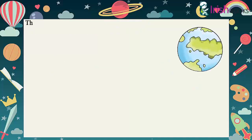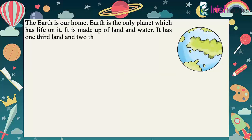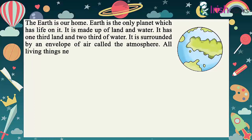The earth is our home. Earth is the only planet which has life on it. It is made up of land and water. It has one third land and two thirds of water. It is surrounded by an envelope of air called the atmosphere. All living things need land, air and water.